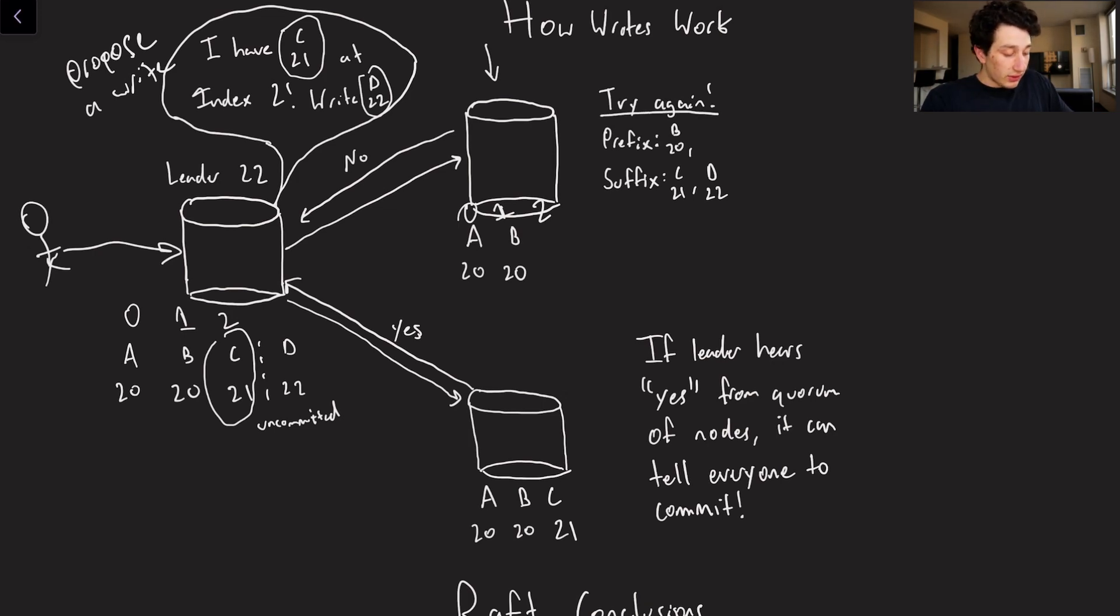And so now what the leader is going to do is it's going to try again, but it's going to move the index one back. So instead of trying to say here, I have c21, it's going to say, Hey, I have b20. So my prefix is going to be b20. And the suffix is c21 and d22. And then it's going to send that over, right? So prefix is going to be b20. And then the suffix is going to be c and d.